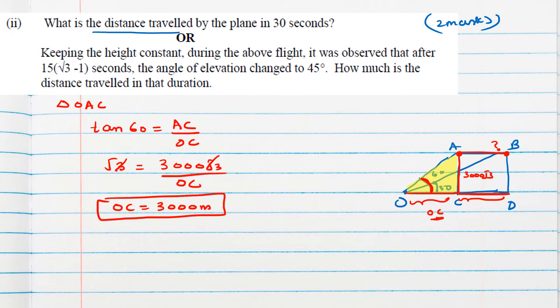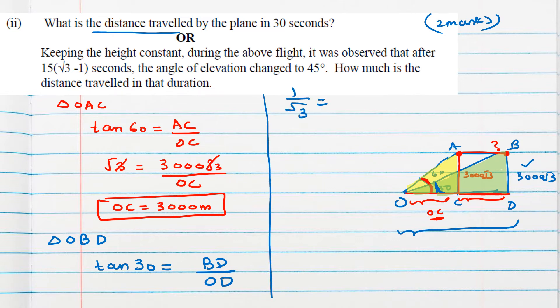In triangle OBD, we will apply trigonometric ratio with the angle 30 degrees. Again, to connect opposite and adjacent sides, we need tan ratio. So tan 30° = BD/OD. Tan 30° is 1/√3, BD is 3000√3, so OD will be 3000√3 × √3 = 3000 × 3 = 9000 meters.